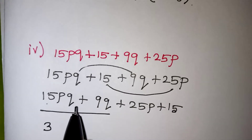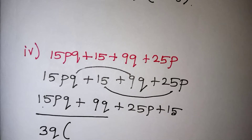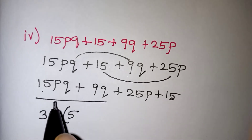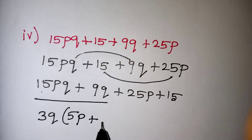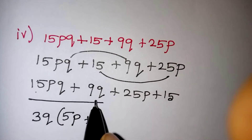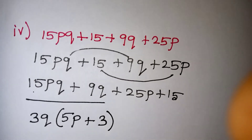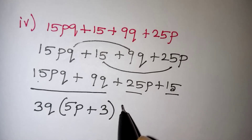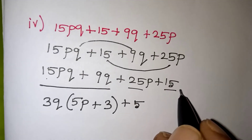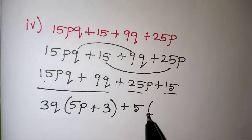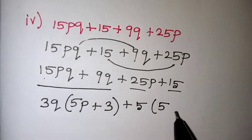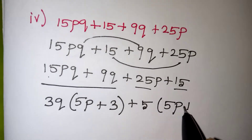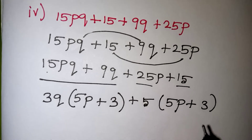For the first pair, 15pq + 9q: both 15 and 9 are in the 3 times table, and q is common, so take 3q outside. 15 ÷ 3 = 5, remaining p, then 9 ÷ 3 = 3, giving the bracket (5p + 3). For the second pair, 25p + 15: both are in the 5 times table, so take 5 outside. 25 ÷ 5 = 5p and 15 ÷ 5 = 3, giving the bracket (5p + 3).